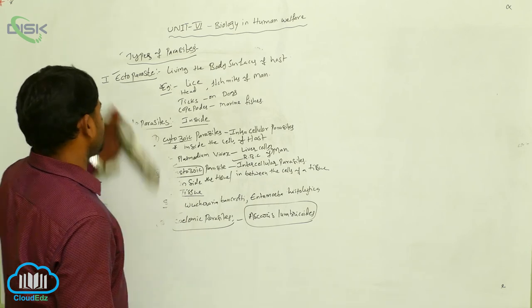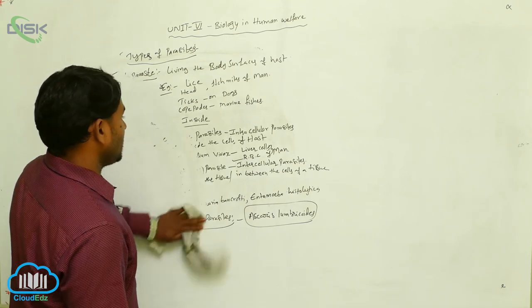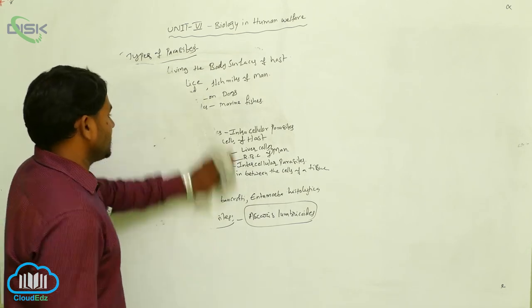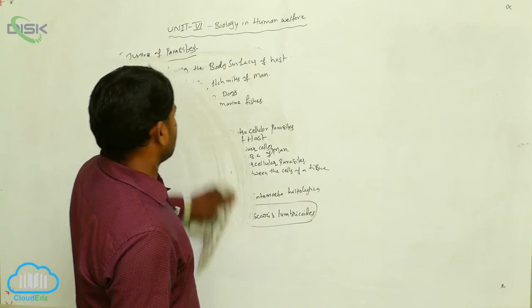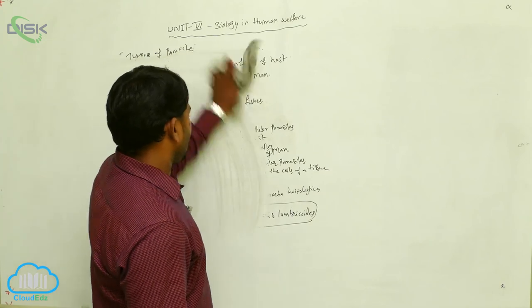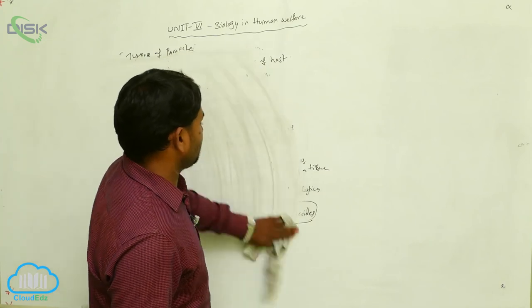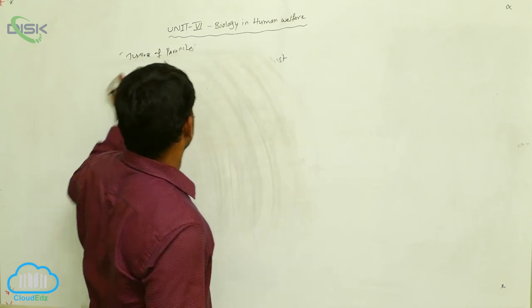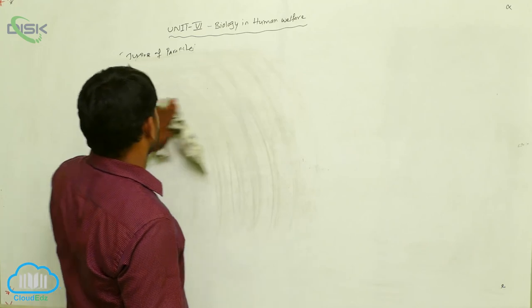Next, there are digenetic parasites, monogenetic parasites, and hyper parasites.